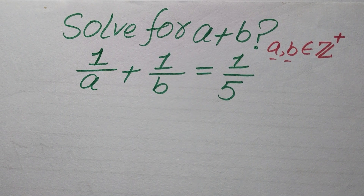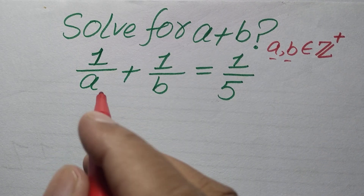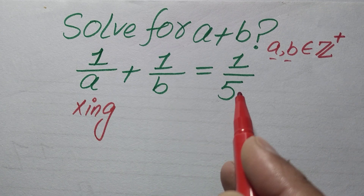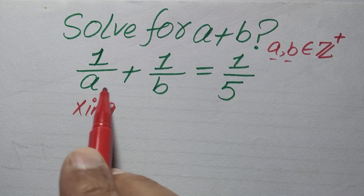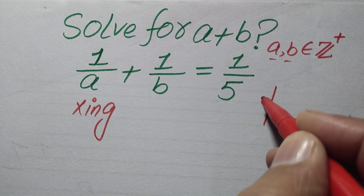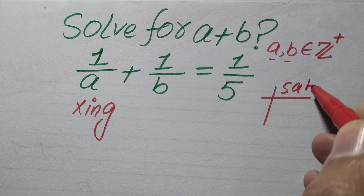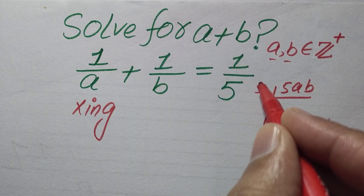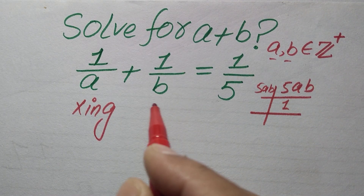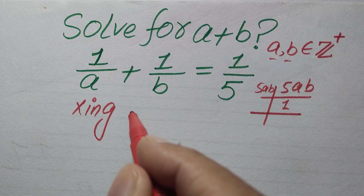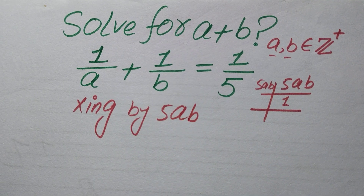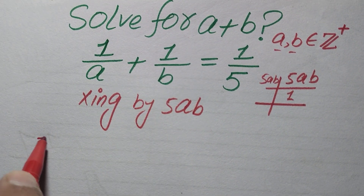The first thing we are going to do is break this fraction. In order to break this fraction we need to multiply both sides by the LCM of the denominators. The LCM of these values becomes 5ab, so we multiply both sides by 5ab.